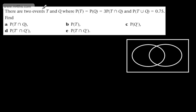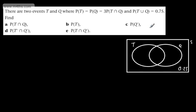Let's look at the next question. There are two events T and Q, where the probability of T equals the probability of Q, which equals three times the probability of T intersection Q, and the probability of T union Q equals 0.75. I'll take a different approach — the outside of the union is 0.25. I'll call the intersection probability X, so P(T) is 3X meaning the T-only region is 2X, and similarly Q-only is 2X.